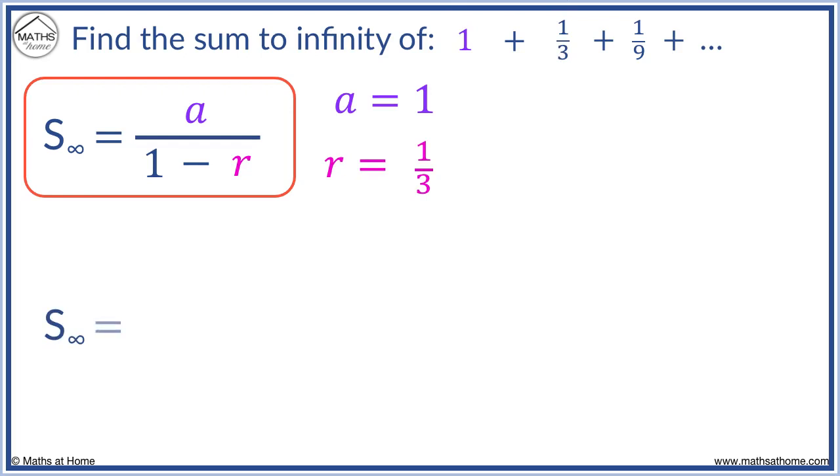The sum to infinity becomes 1 over 1 minus 1 third. 1 minus 1 third equals 2 thirds. And 1 divided by 2 thirds equals 3 halves. The sum to infinity equals 3 over 2.